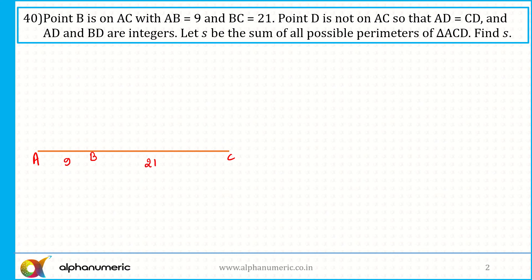Point D is not on AC such that AD equals CD. So AD equals CD and D is not on the line AC — this gives us an isosceles triangle. Let's say AD equals X and CD also equals X, and both AD and CD are integers. Let S be the sum of all possible perimeters of triangle ACD.